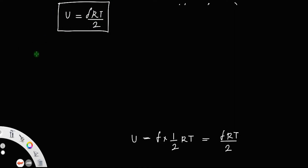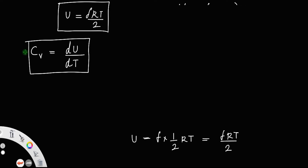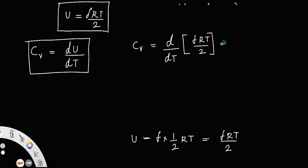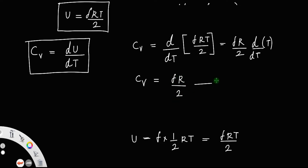Now, the molar specific heat at constant volume Cv is, for one mole of gas, the derivative of total internal energy with respect to temperature. So Cv = dU/dT = d/dT of (fRT/2). Since f, R, and 2 are constants, Cv = fR/2. Let us call that equation number 1.